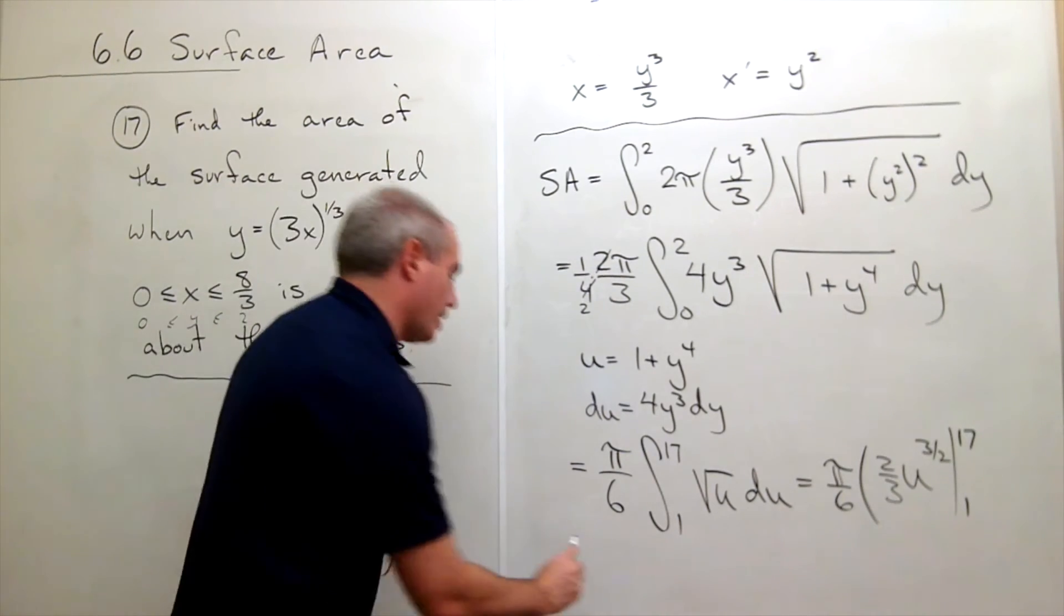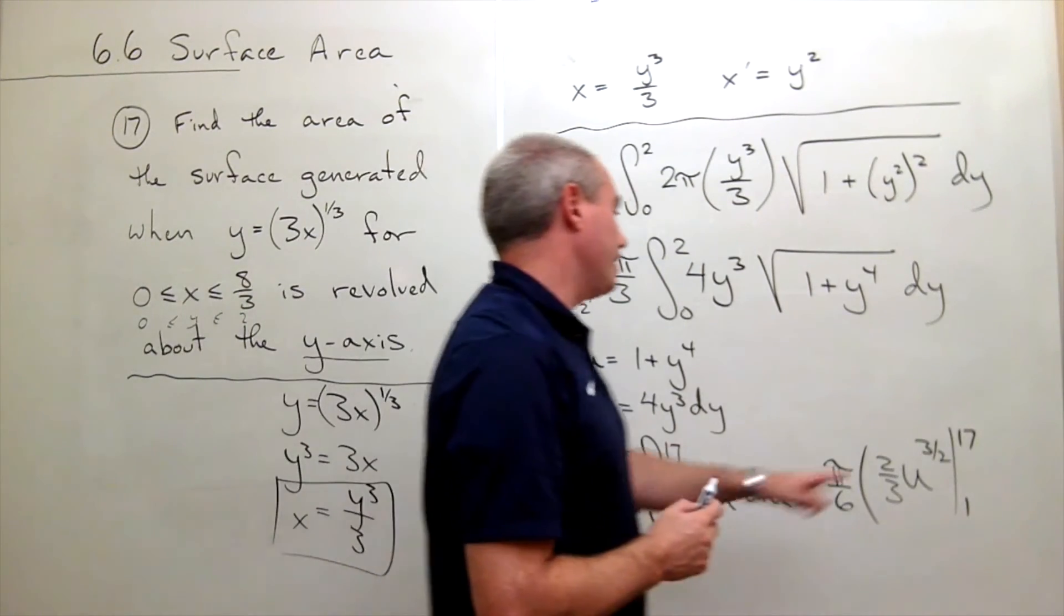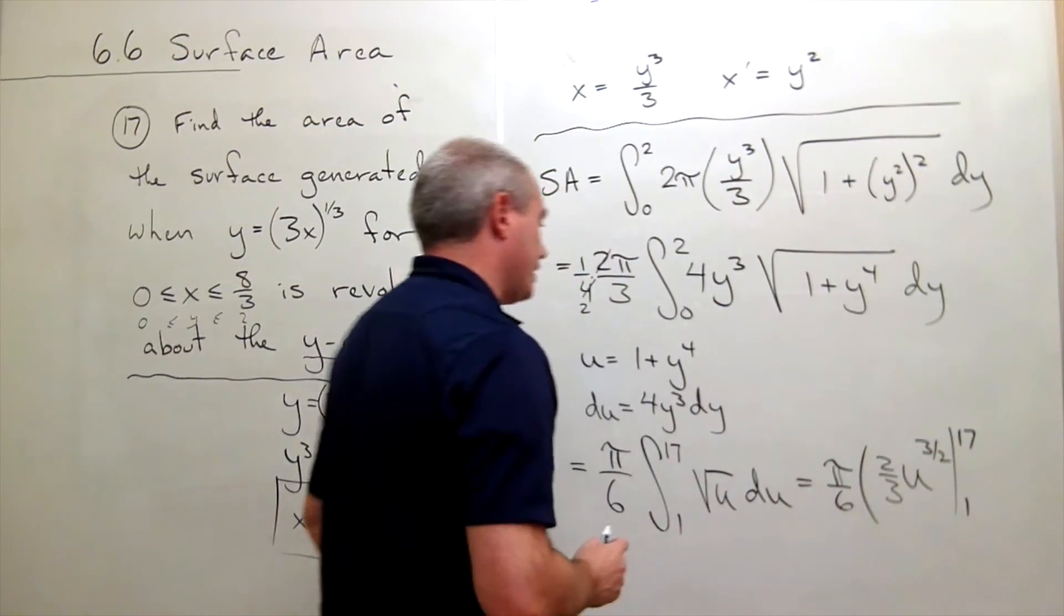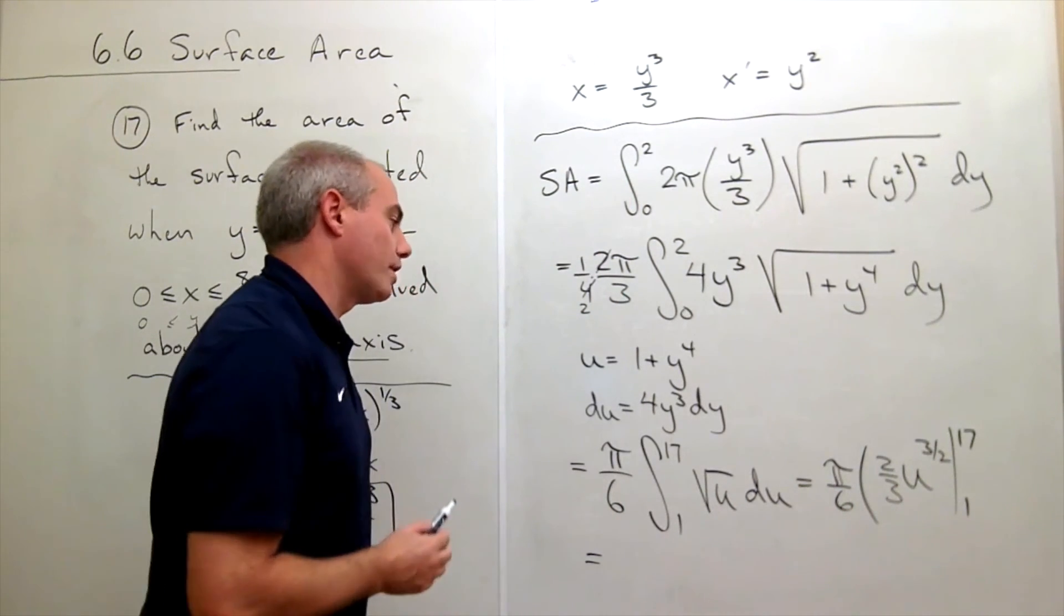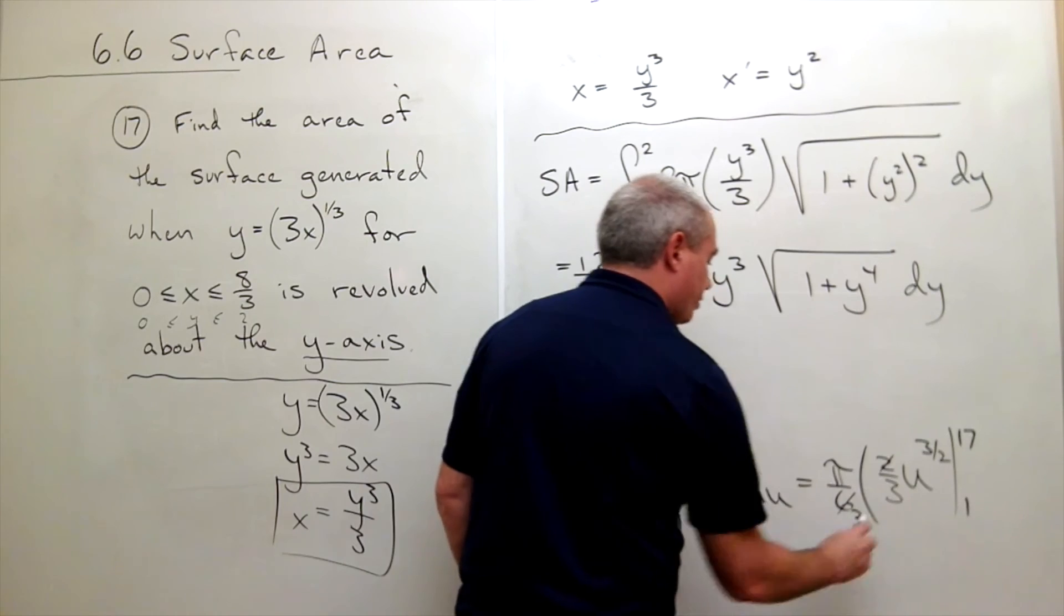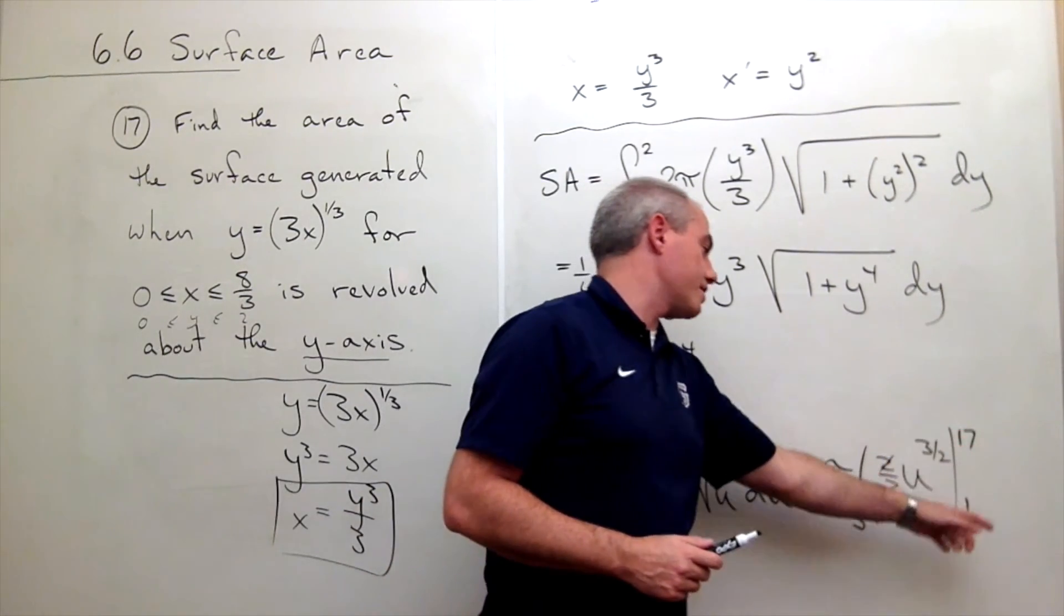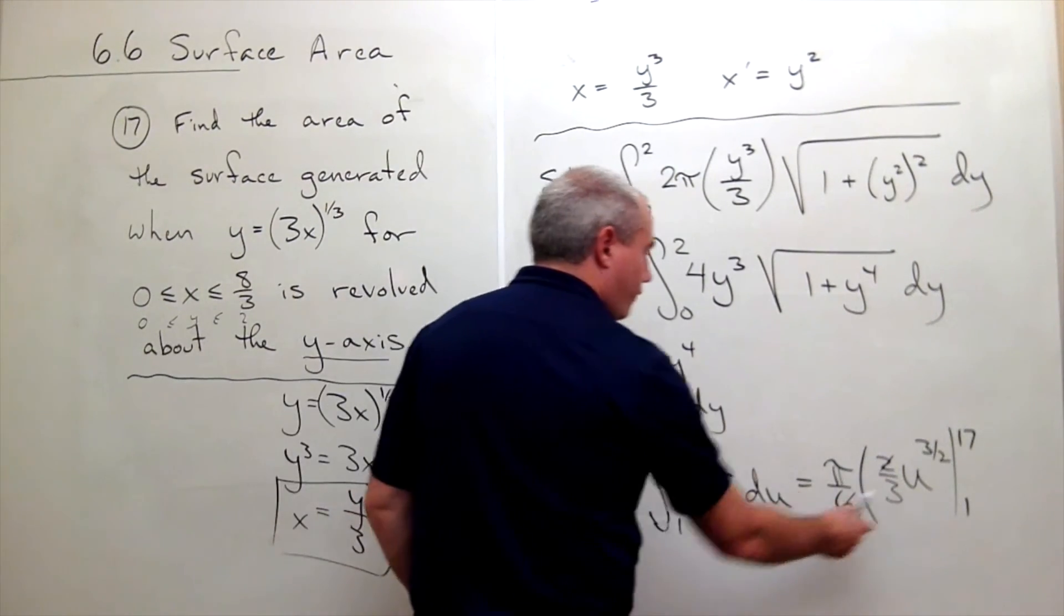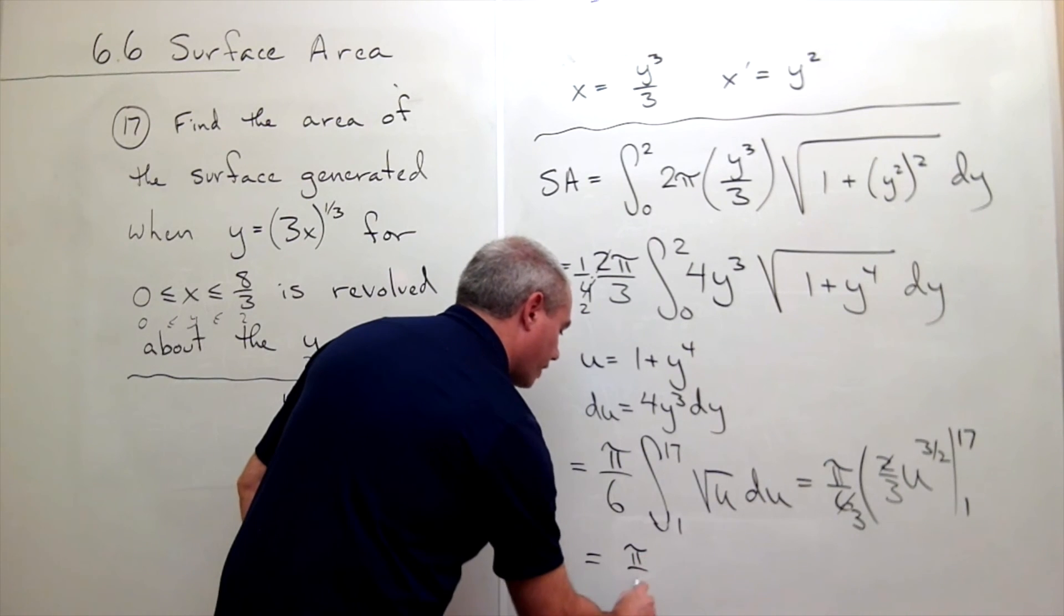We're almost done. Let's plug things in here. I could pull that 2/3 out if I wanted to. And if I do, the 2 would cancel with a 6 and give me a 3. Now the only thing we have to do is plug in the 17, plug in the 1. What do I have out front? I have a π over 9.